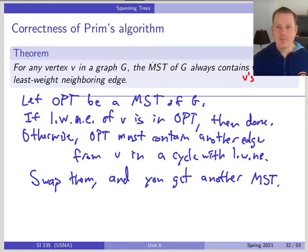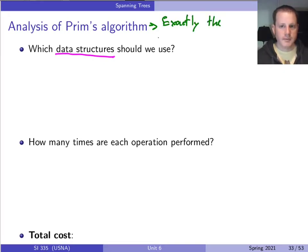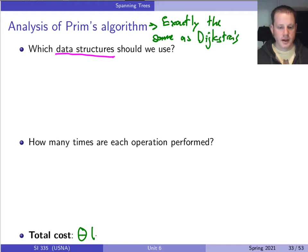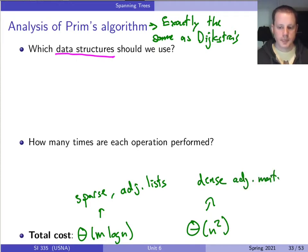That's it for correctness of Prim's algorithm. Now for the running time analysis, it really depends on the data structure. This algorithm is exactly the same as Dijkstra's. We know that Dijkstra's either costs Θ(m log n) with an adjacency list representation of a sparse graph, or Θ(n²) if we use an adjacency matrix for a dense graph. These are the two running times of Dijkstra's, and they're going to be exactly the same as Prim's — because Prim's is doing the same thing as Dijkstra's; the only difference is the weights associated with each edge.